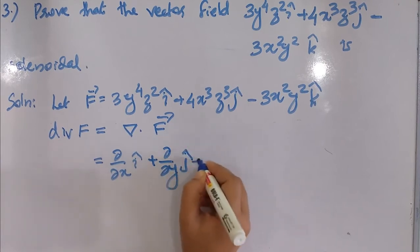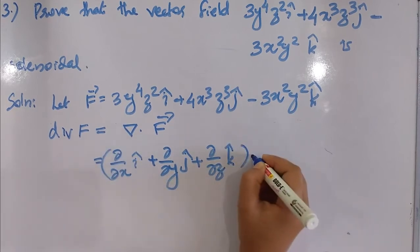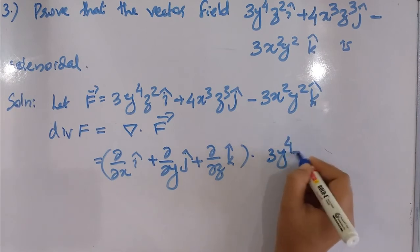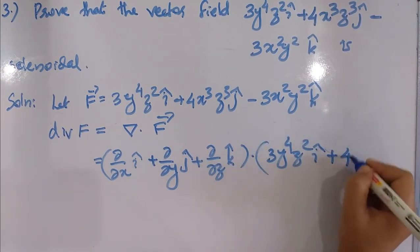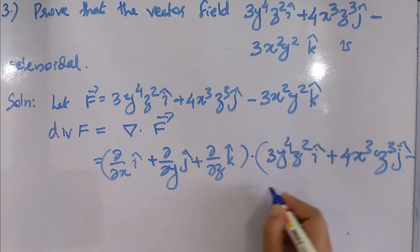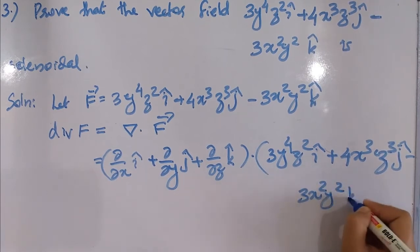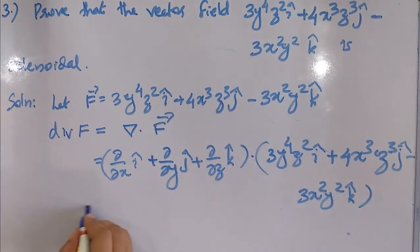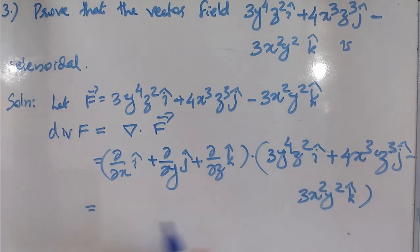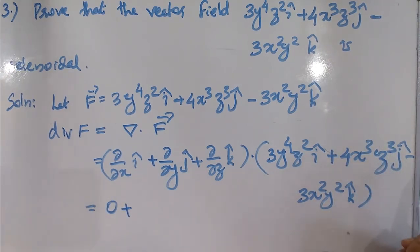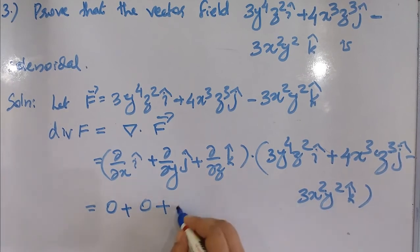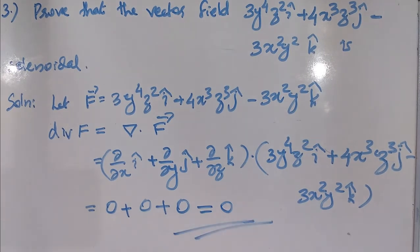Computing the divergence: (∂/∂x)i + (∂/∂y)j + (∂/∂z)k dotted with 3y⁴z²i + 4x³z³j − 3x²y²k, which equals 0. Therefore divergence of F = 0, and the given vector field is solenoidal.